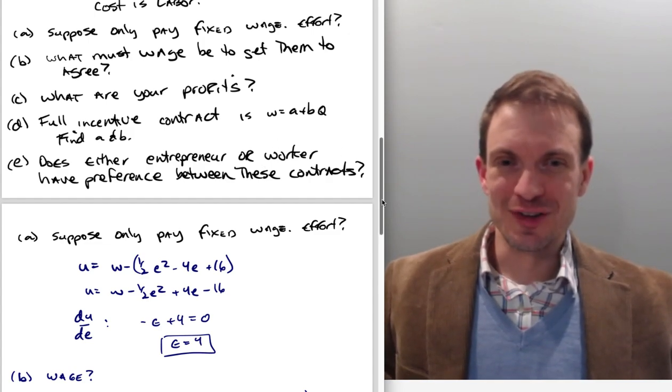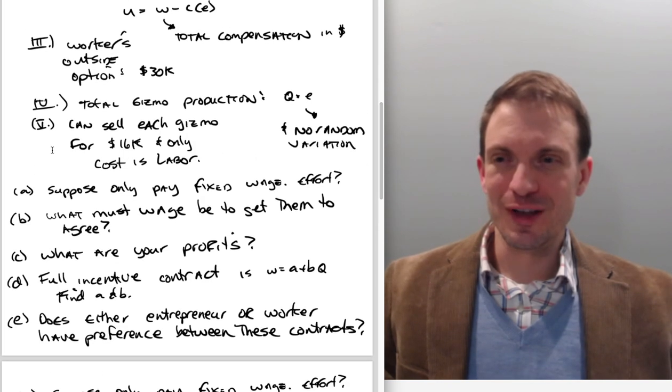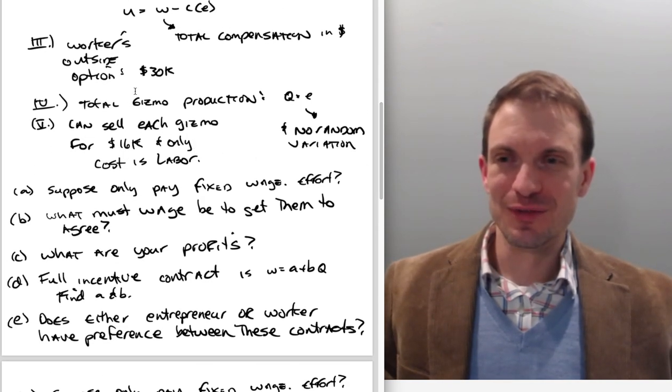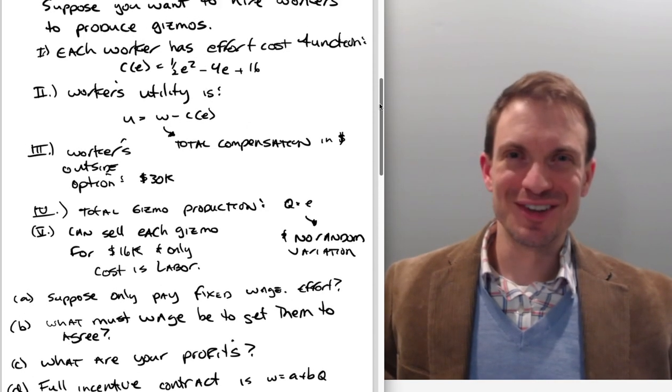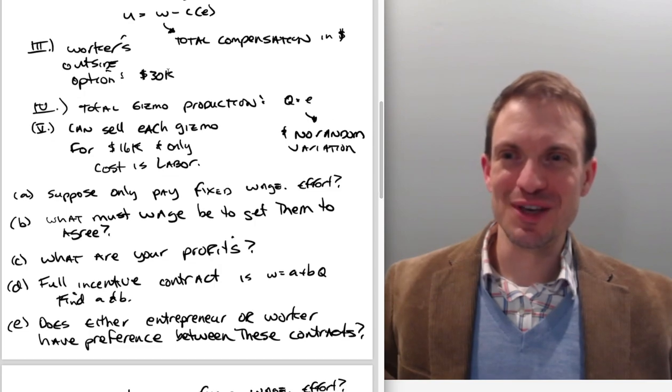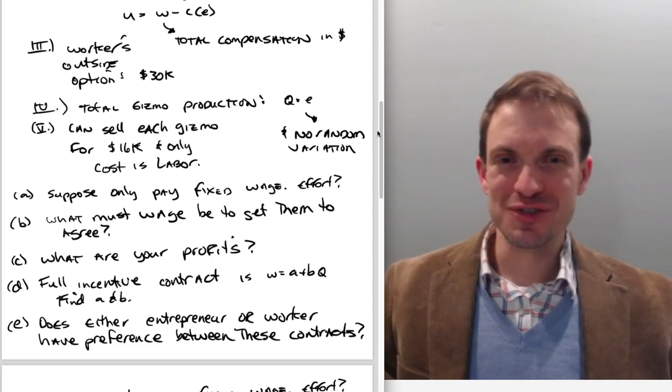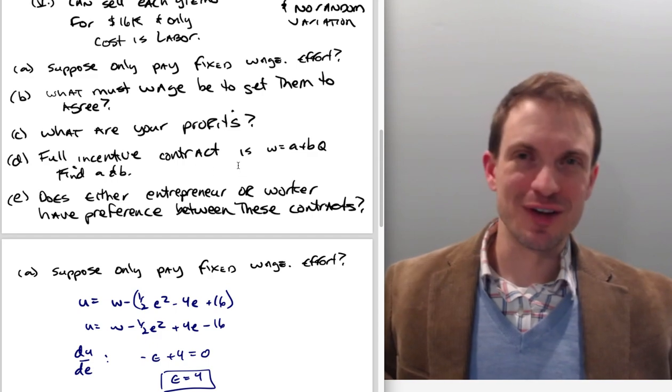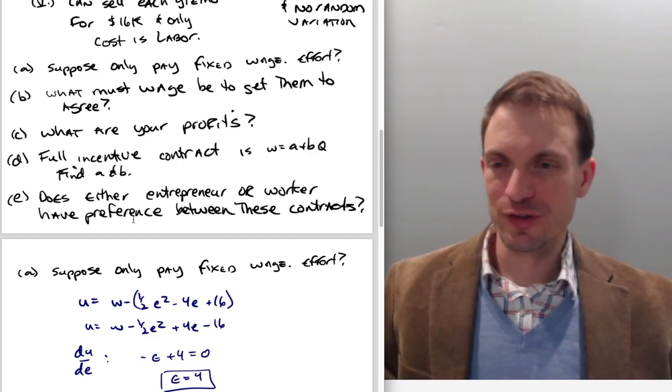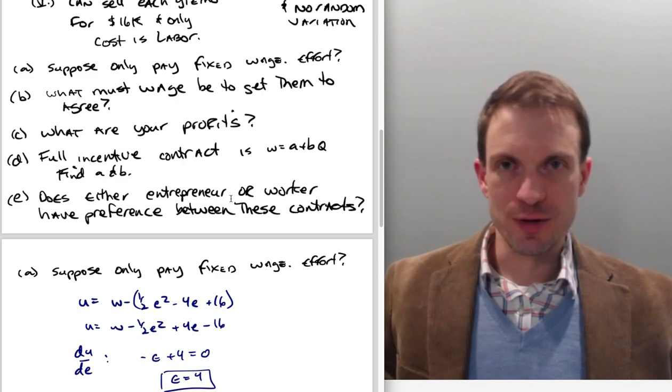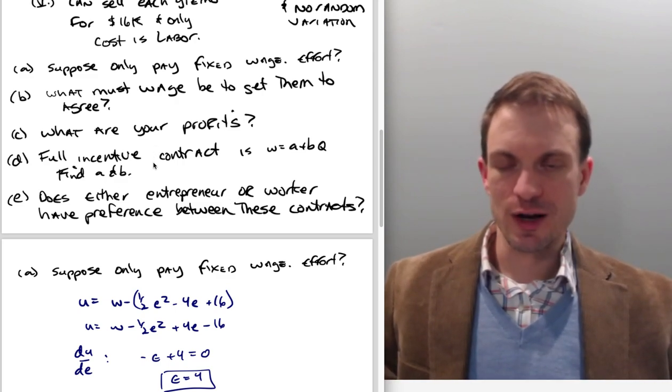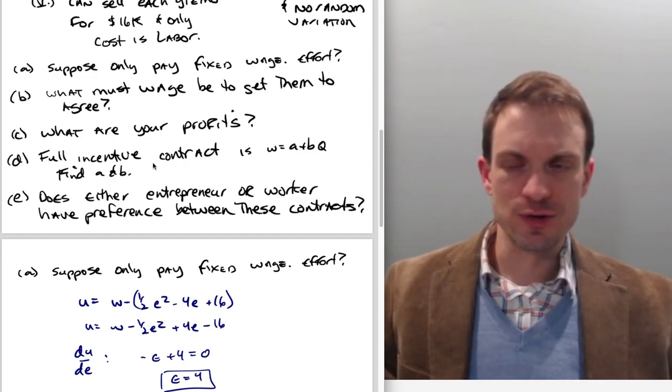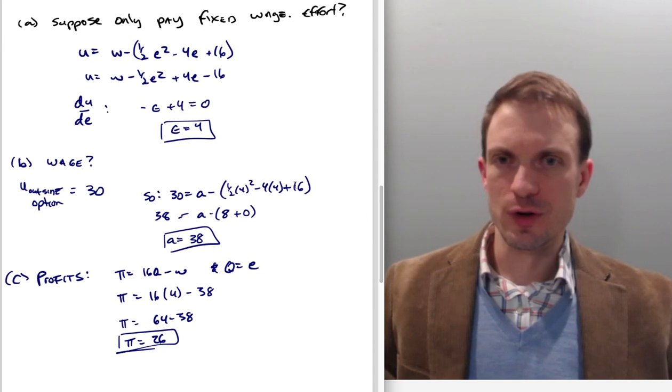Which one's going to be profit maximizing? It turns out under this type of setup in relatively simple models like this, making some assumptions, the full incentive contract is the profit maximizing contract. So anyway, so let's go ahead and see what happens if we pay only a fixed wage.